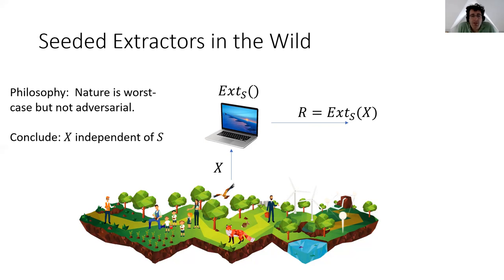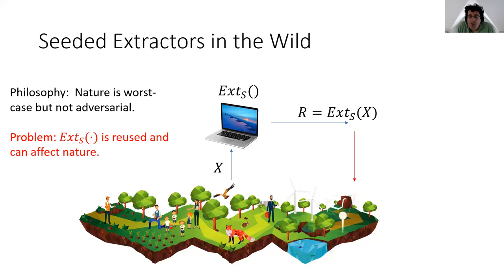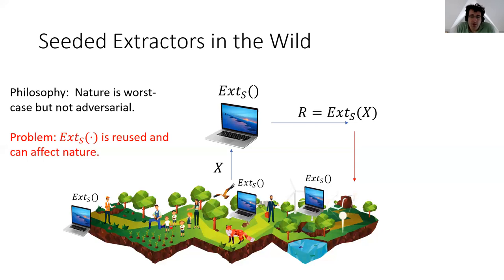The main point of this talk is that this assumption might be too optimistic. The reason is that this extractor is going to be reused over time, and the outputs of the extractor can make their way back into nature and affect nature, changing the distribution of future samples. For example, we might use some derived randomness as input into some process, and then use timing interrupts related to that process to generate the next sample x. Therefore, the distribution of the next sample can depend on randomness extracted previously, and therefore on the extractor itself — which has the seed hard-coded. Moreover, if this extractor is used by many devices which can all affect nature, it seems reasonable that nature may be affected by the extractor itself.